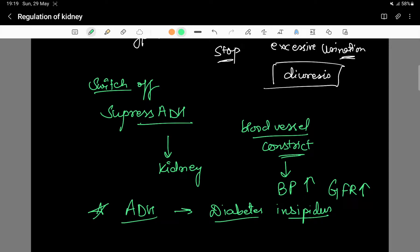So the whole control system consists of ADH, ANF, and the RAAS system. Together, these three systems regulate the entire kidney and nephron functioning, maintaining the whole body's fluid and pressure balance. I hope everything is clear — thank you so much.